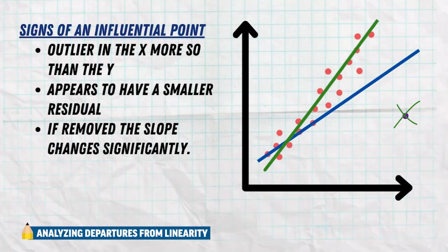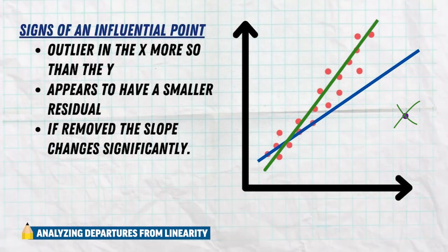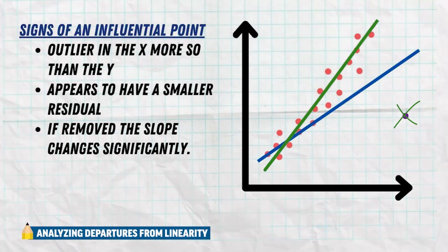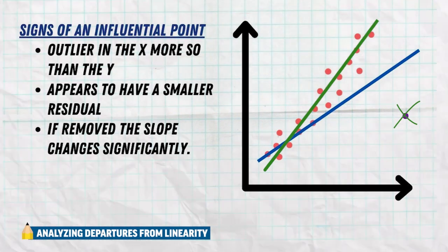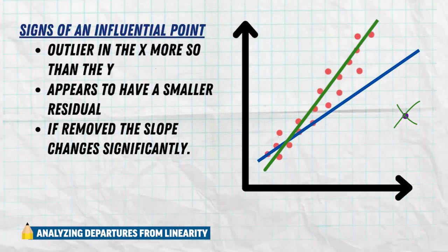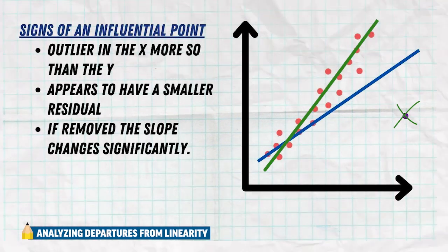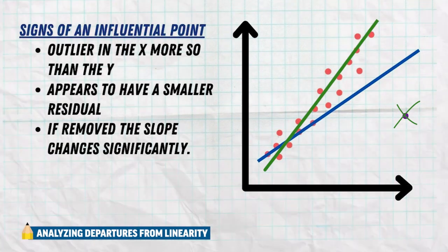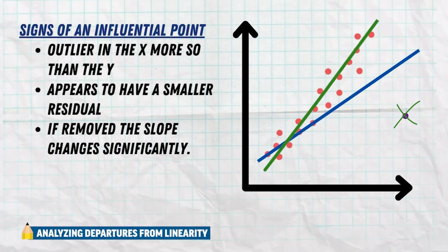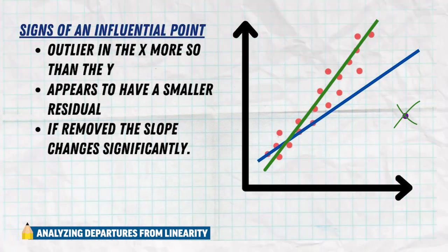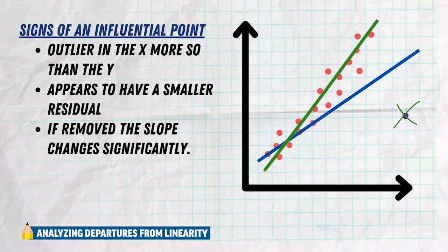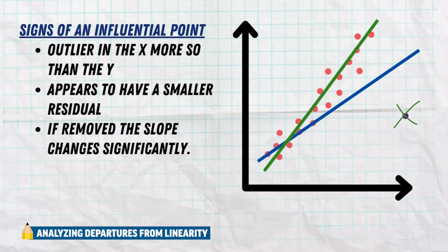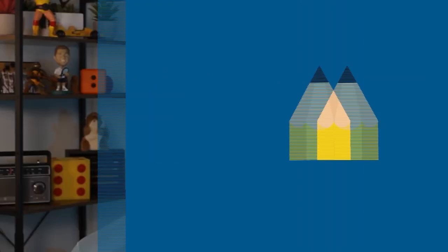These are all signs of influential points. They're outliers in the X direction more so than the Y. They actually appear to have a smaller residual because the line is so influenced by them, trying to give them a small residual. But if removed, the slope changes significantly. This is what we identify as an influential point.